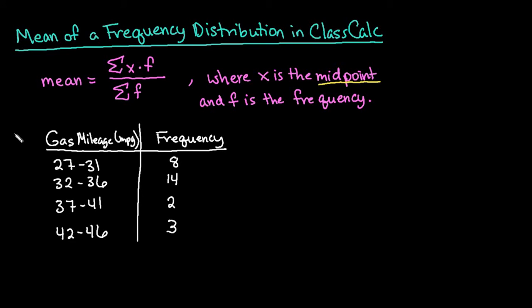So the first thing that we want to do is find the midpoint or our x values of each of these classes. To find the midpoint of a class, it's going to be your lower class limit plus your upper class limit divided by 2.